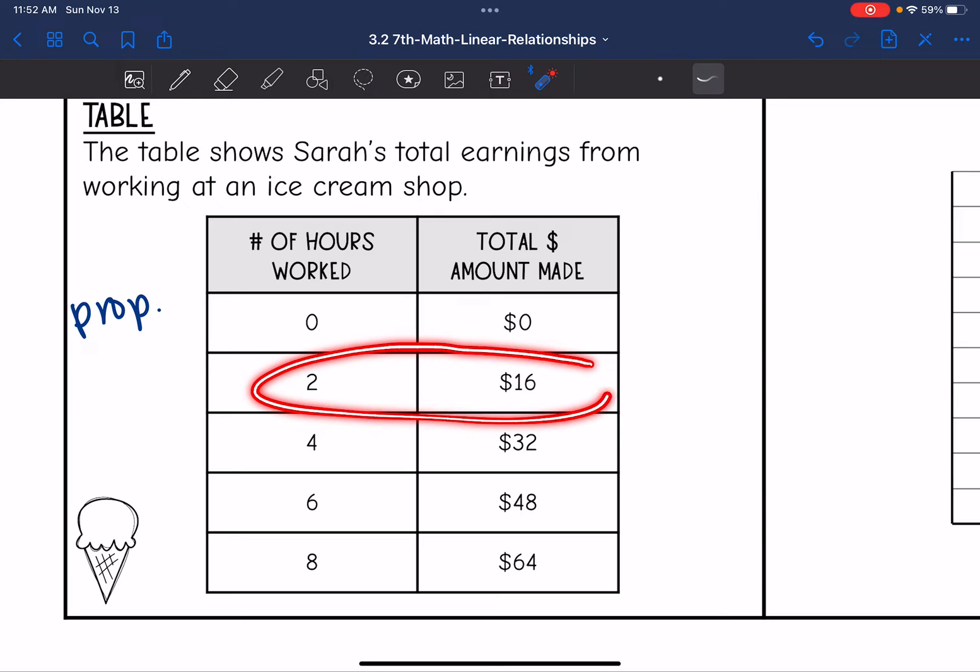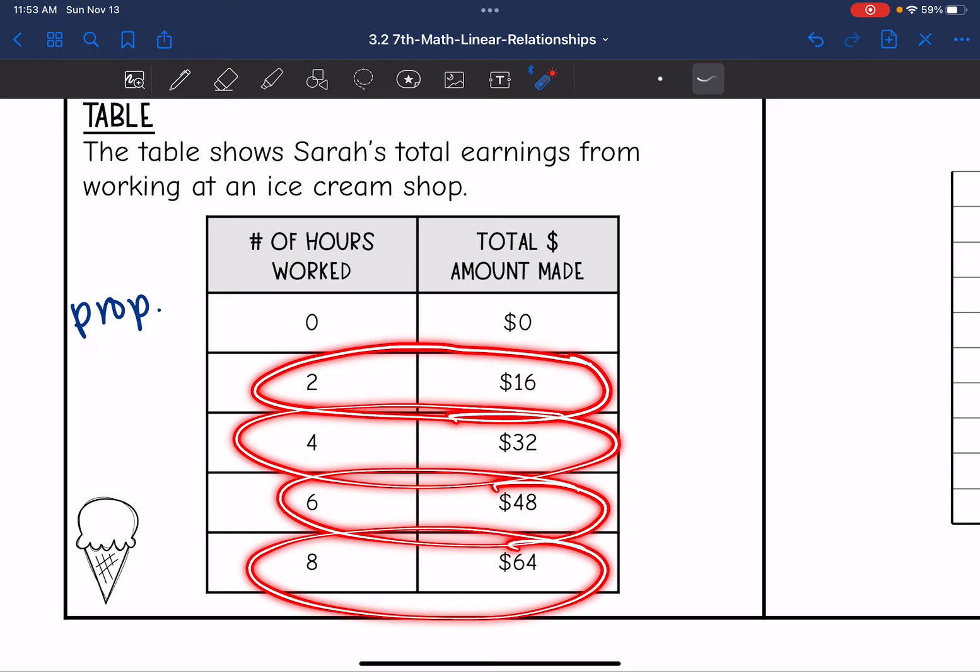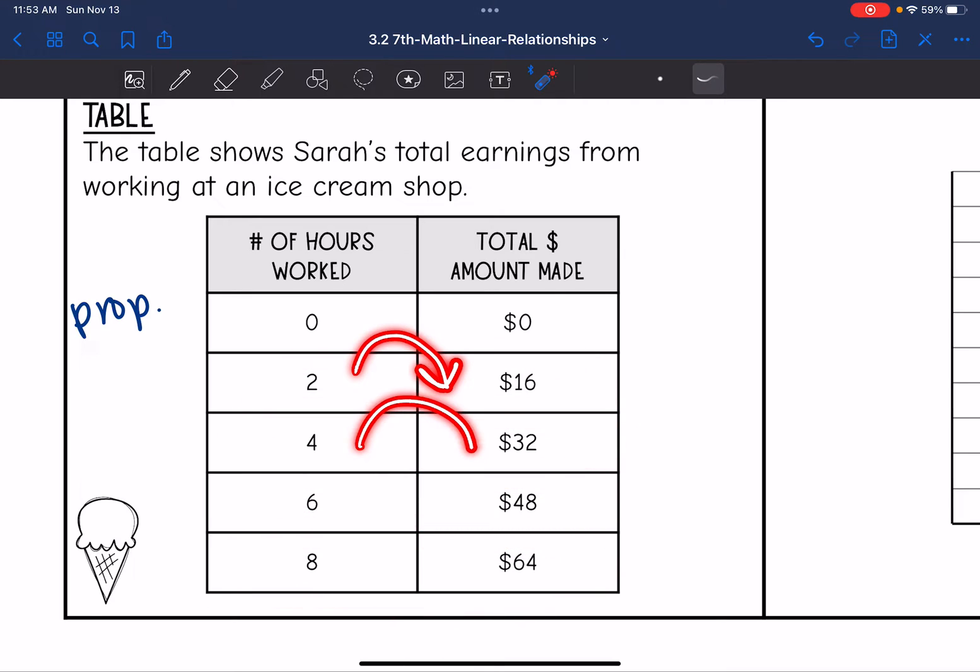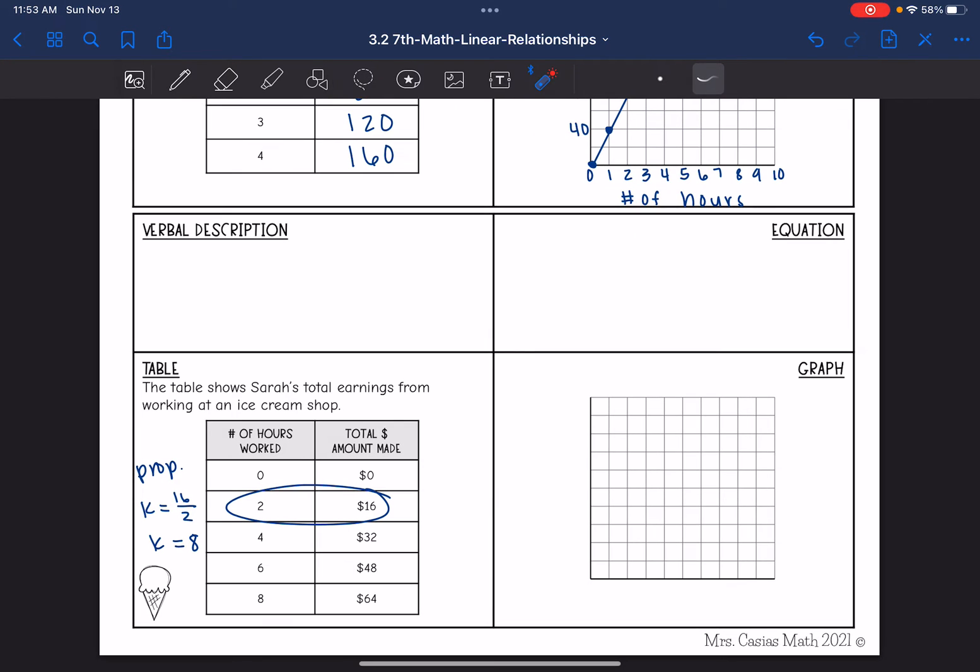In two hours, she made $16, four hours she made $32, six hours she made $48, and eight hours she made $64. So if you cannot see what that multiplicative relationship is right away, then you can do y divided by x to figure it out. I'm going to use this ordered pair right here, 16 over 2. So the constant of proportionality is 8, which makes sense. I'm multiplying the number of hours she's worked by 8. So that means the equation would be y equals 8x.